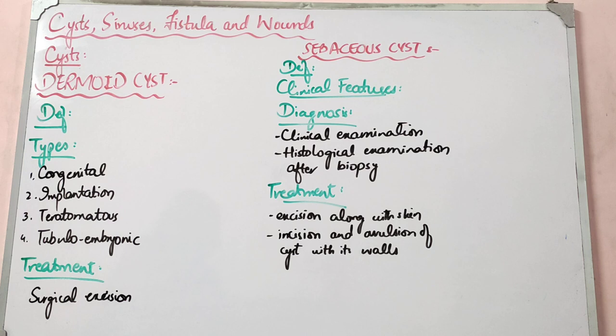In general surgery you will need ATLS and surgical anatomy, but most chapters are very important and not so difficult — these chapters will be easy. So we will start this chapter; the first part is cysts.